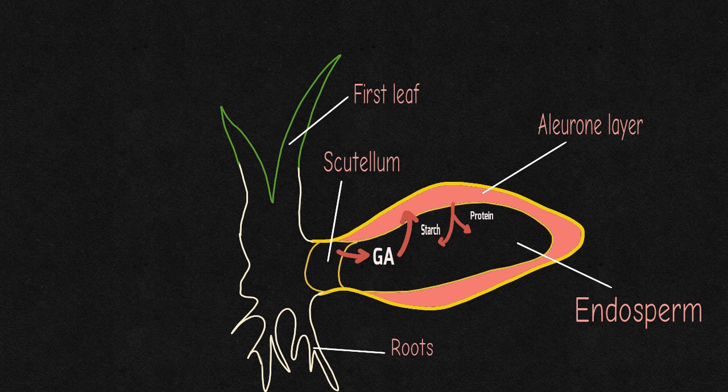Alpha-amylase and maltase are key enzymes in the degradation of starch to glucose, and proteinases hydrolyze proteins to short peptides and amino acids.